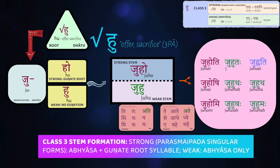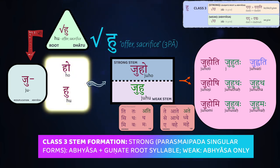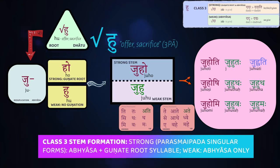Let's take our characteristic root hu, meaning 'to offer.' First, reduplicate the root. In the prefixed syllable, the ha-kara reduplicates as a ja-kara, and the short u stays short u. So we get ju-hu, and that's our weak stem. To make the strong stem, you take the weak stem and gunate the second syllable hu, giving us ju-ho. So: juho is the strong stem, and juhu is the weak stem.